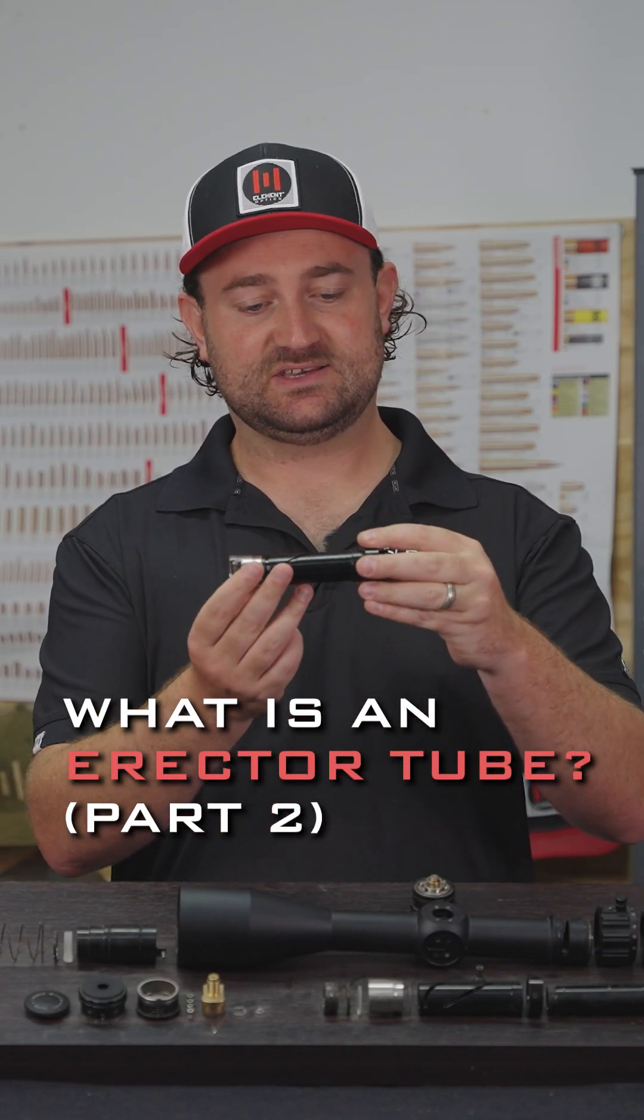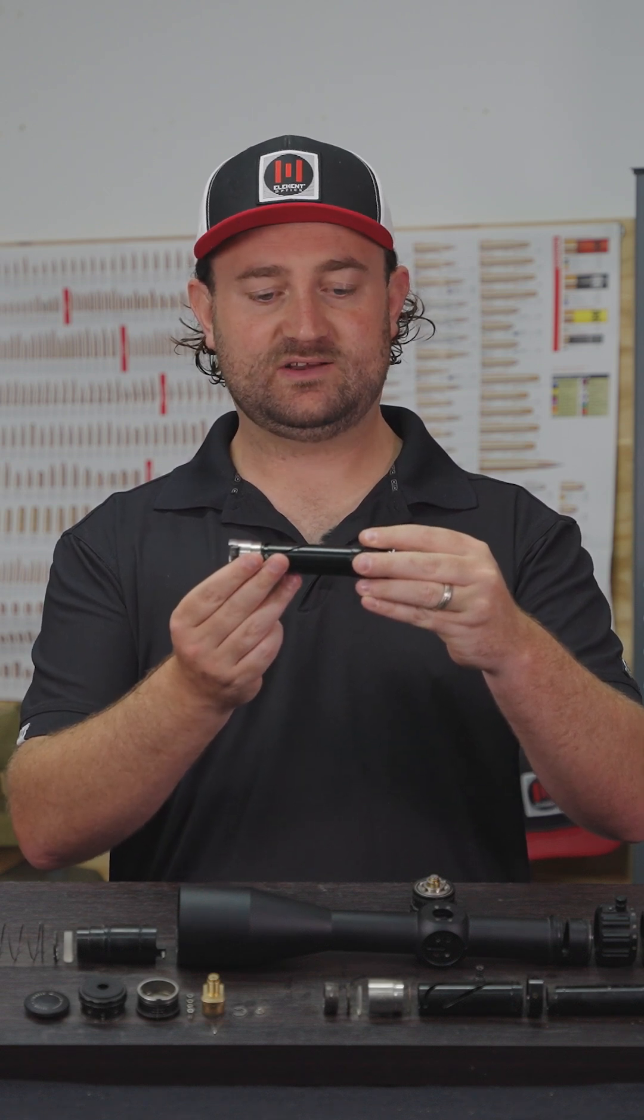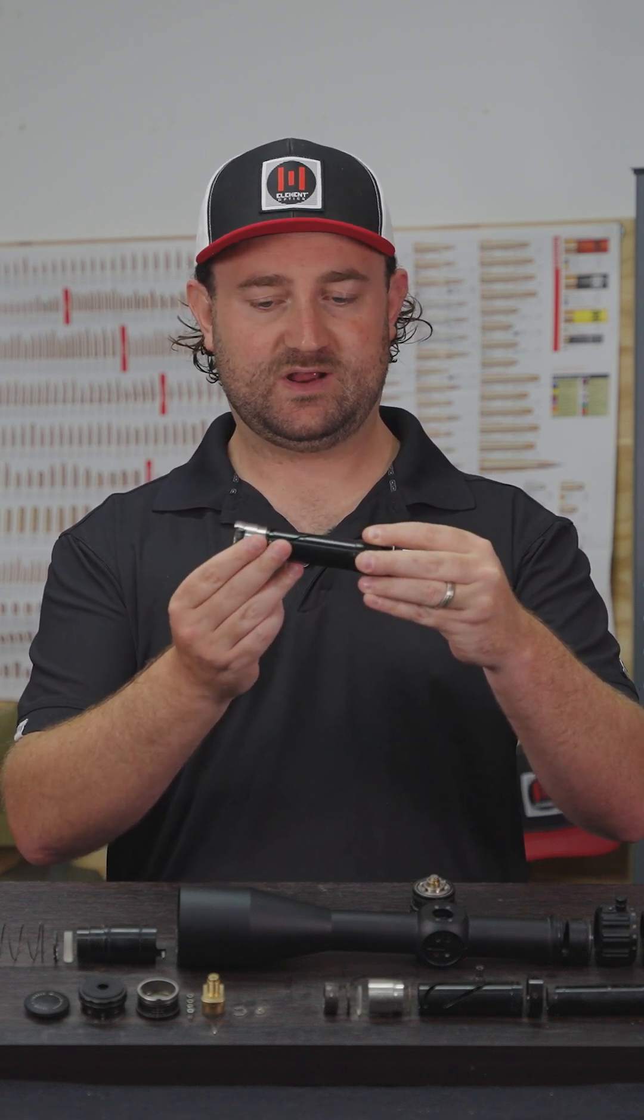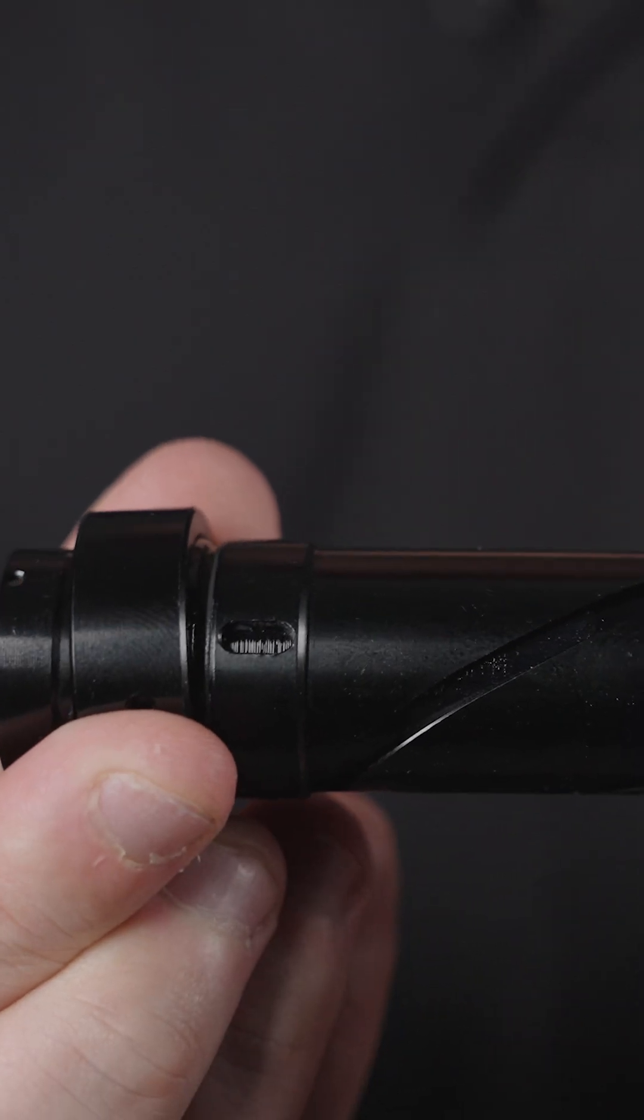Here we find a two-axis gimbal that actually holds the rear of the erector tube in a perfect location while allowing the front to move up, down, left and right.